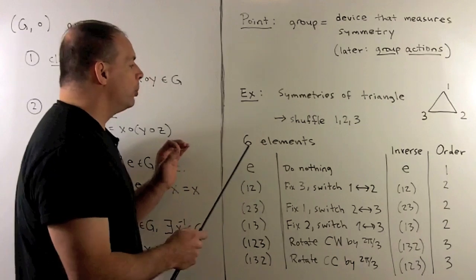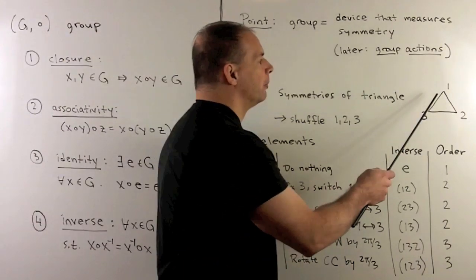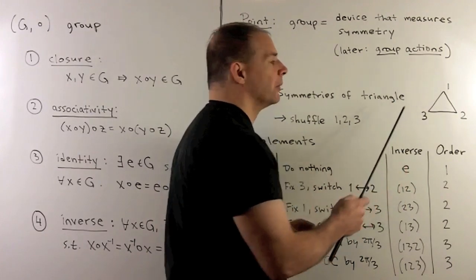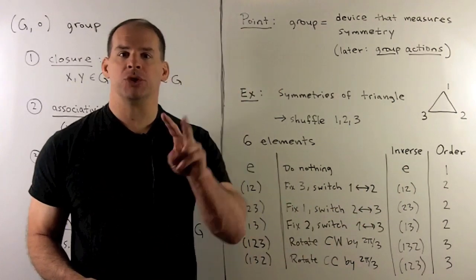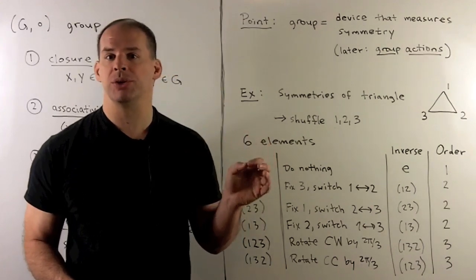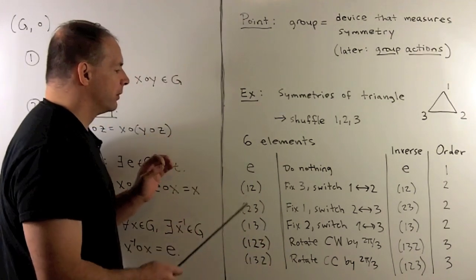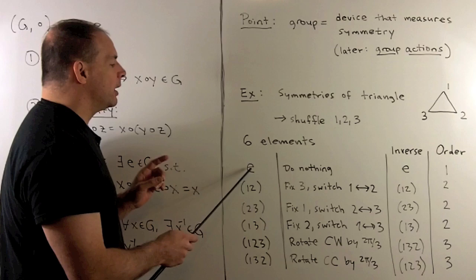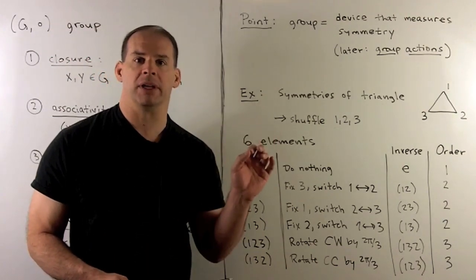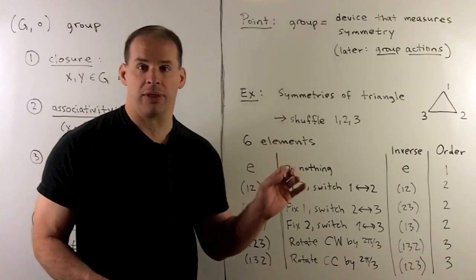For the multiplication, we're just going to do composition of the corresponding bijections. Our group has six elements. To see this, note if I have a symmetry, there are three places it can send 1. Once we've made that choice, there are two ways to arrange the remaining two numbers. So 3 times 2 is 6 elements. If we list these elements, first we have the identity element that just sends 1, 2, 3 to 1, 2, 3 respectively. The corresponding symmetry of the triangle is to do nothing.